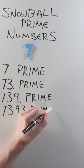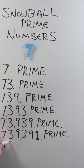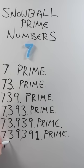Seven hundred thirty-nine thousand three hundred ninety-one prime, seven million three hundred ninety-three thousand nine hundred thirteen prime, seventy-three million nine hundred thirty-nine thousand one hundred thirty-three prime.